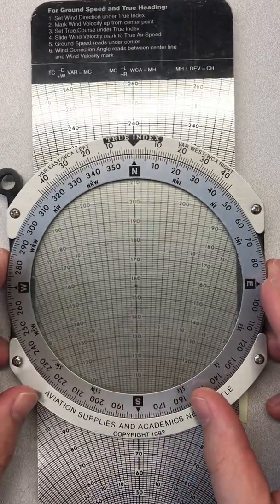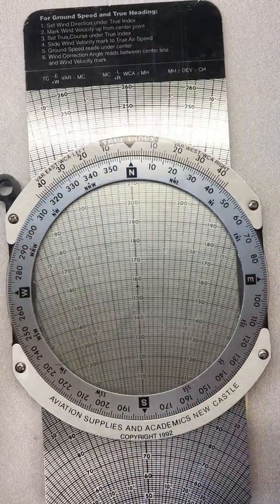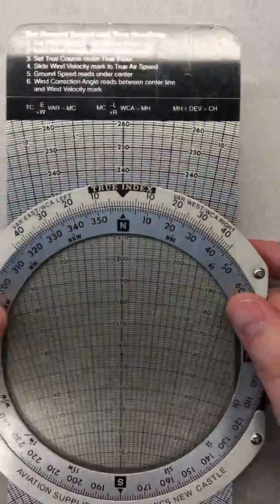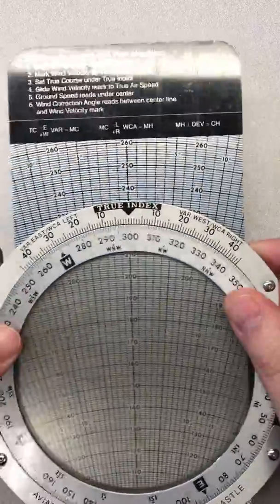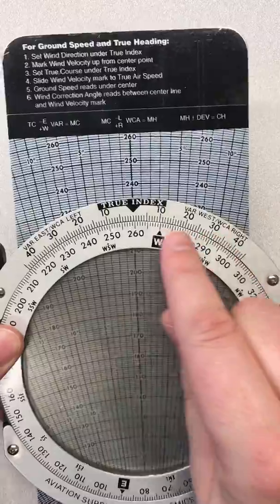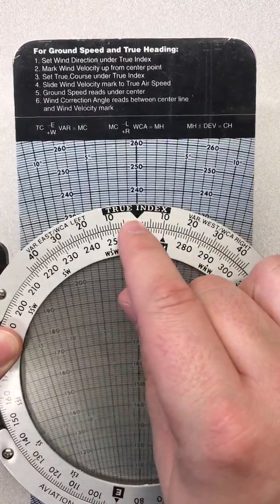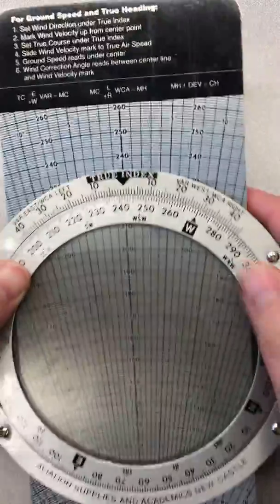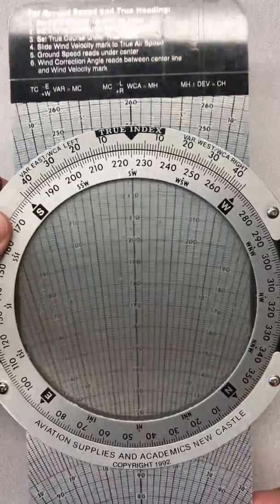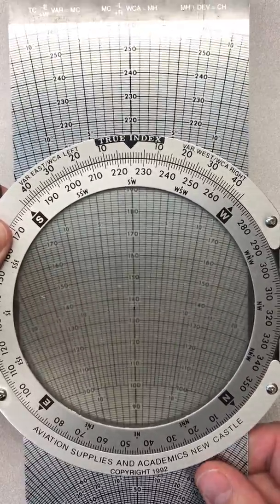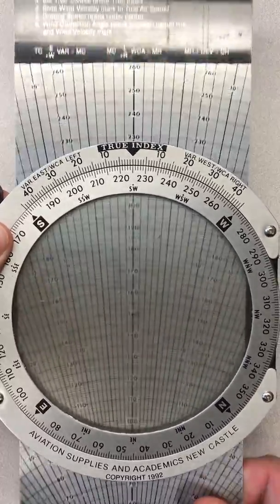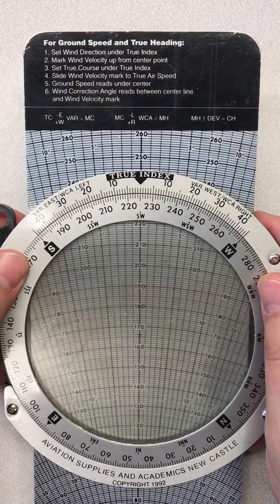First things first, a couple things to explain real quick. This is the wind side. There's two ways we can manipulate this. The inner circle we can spin around, as you see here. There's a true index way up top, and then also in addition to being able to spin the inside of this, we can actually move the speeds behind it.